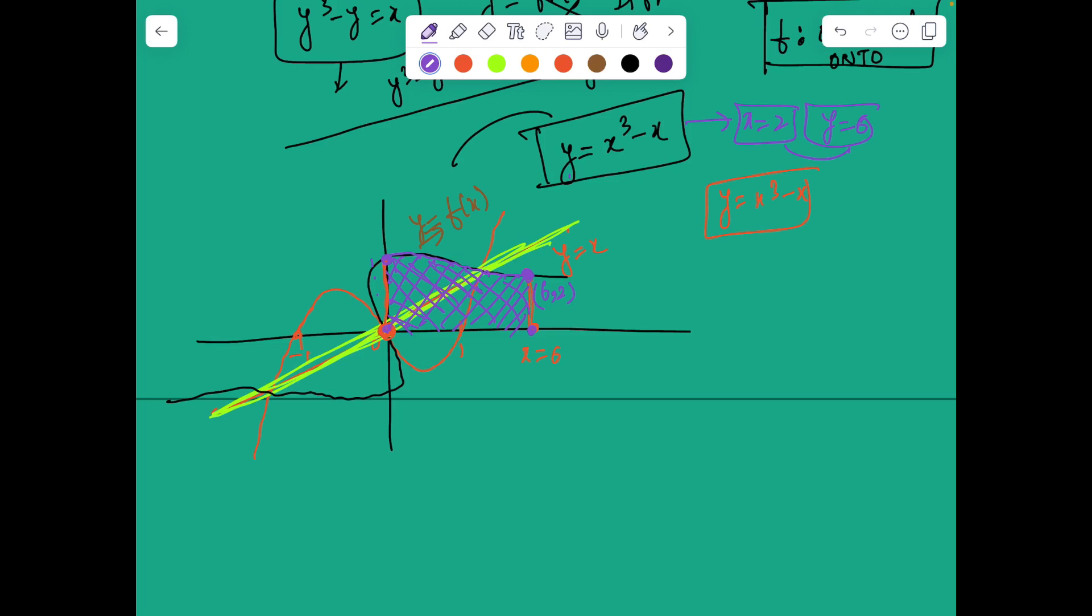Now at 0, what is the value of the original function? So now we have three possible values. At x equal to 0, the height of the original function here from the graph can be checked as 1. So we have 0 comma 1 over here. And its reflection in the line y equal to x is going to be 1 comma 0, right.